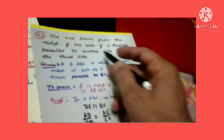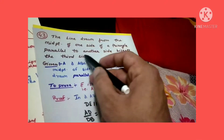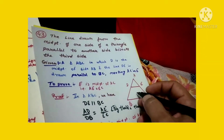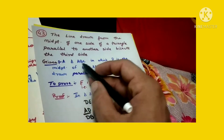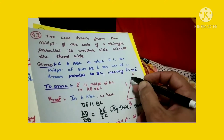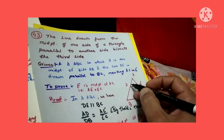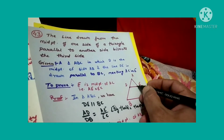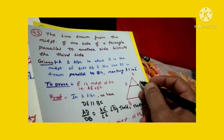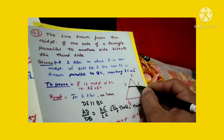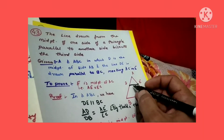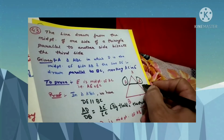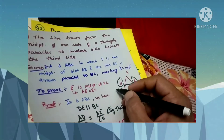The line drawn from the midpoint of one side of a triangle, parallel to another side, bisects the third side. We have been given triangle ABC. D is the midpoint of side AB, and we have to prove that E is the midpoint of AC. This is what is given and what we need to prove.